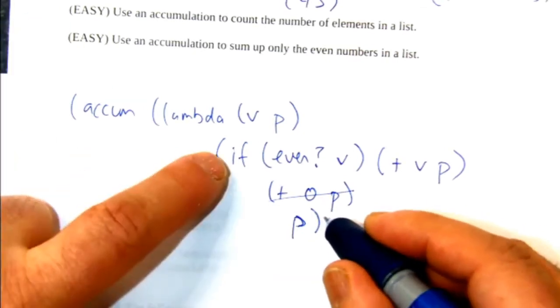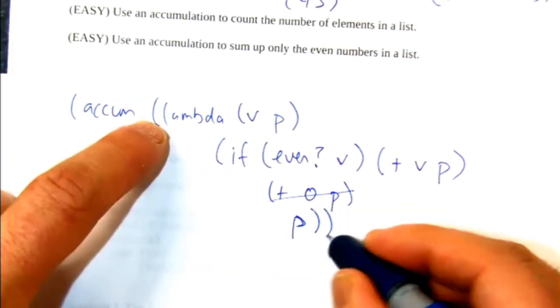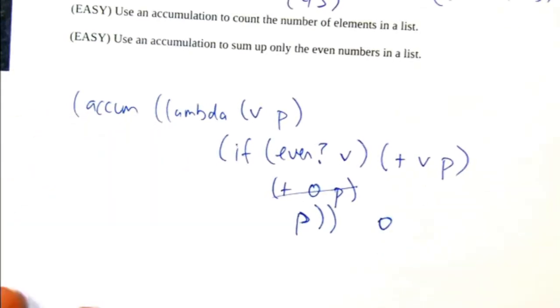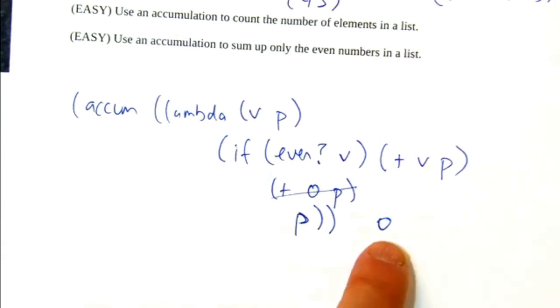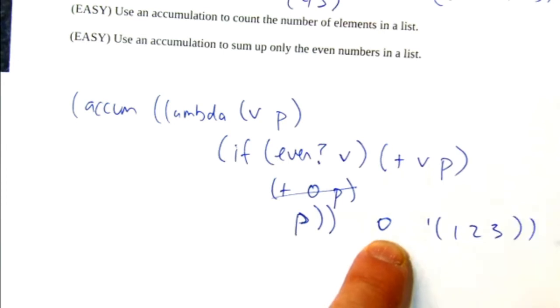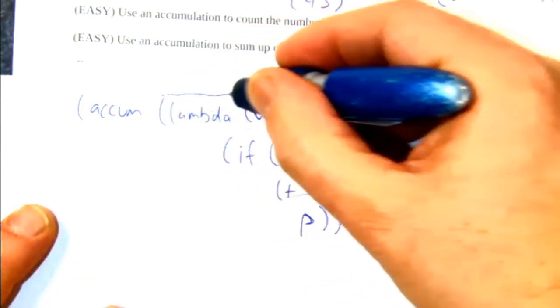So that's it. That's the lambda. And what's the base case? We have to feed it a 0, right? We have to feed it a 0 as the initial sum of the list. So this is the answer.